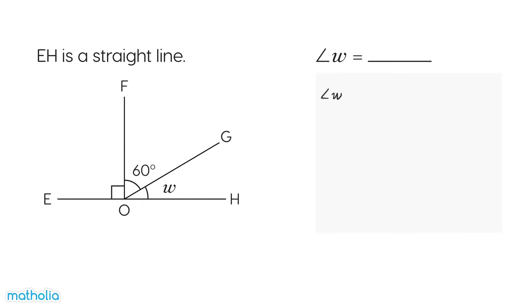The sum of the angles on a straight line is 180 degrees. So to find angle W, we subtract angle FOE, which is a right angle of 90 degrees, and angle FOG, which is 60 degrees. Substitute in the values of the angles and solve.